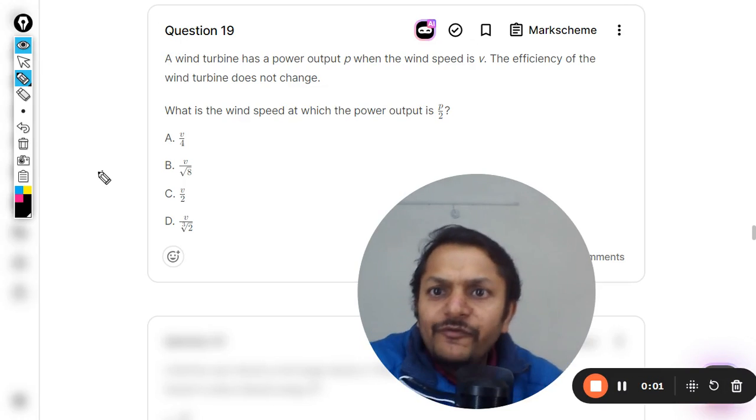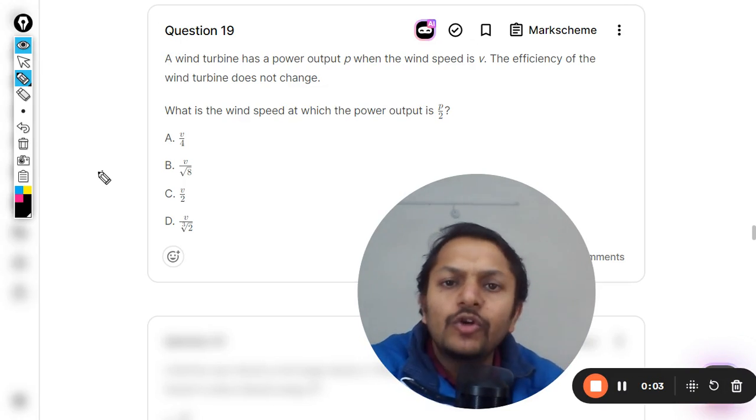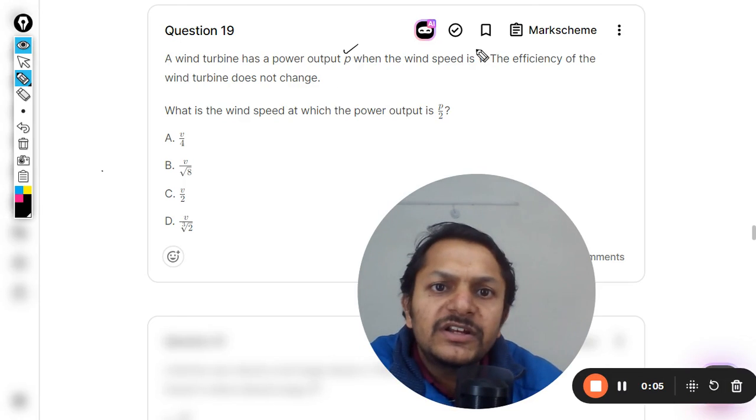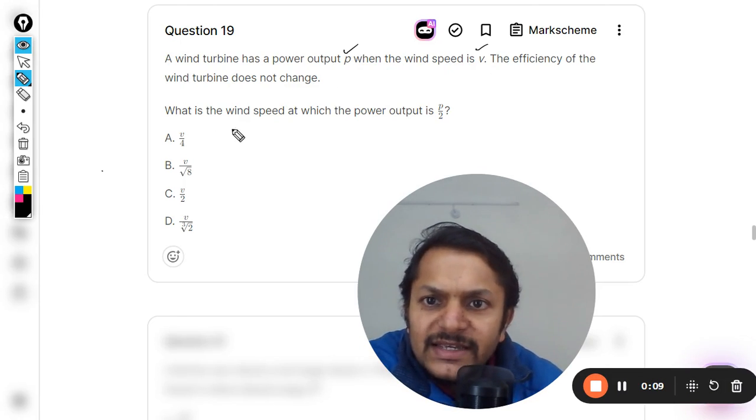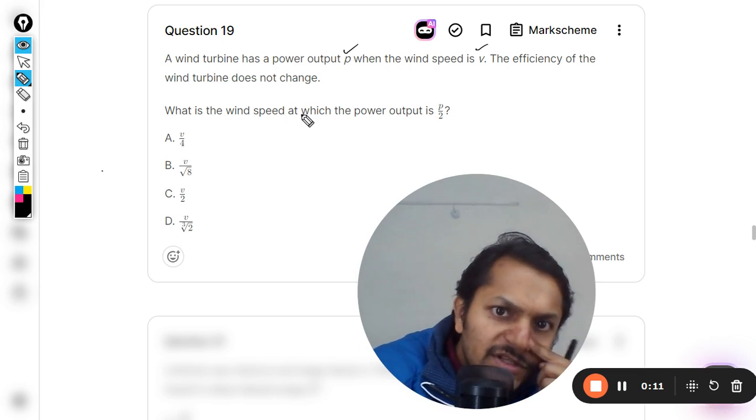Let us see what is there in this question. A wind turbine has a power output P when the wind speed is v. The efficiency of the wind turbine does not change. What is the wind speed at which the power output should become P by 2?